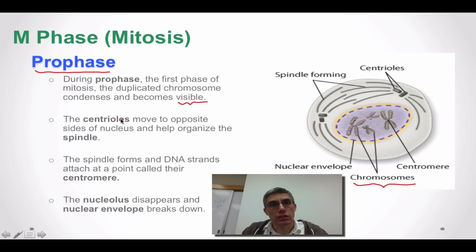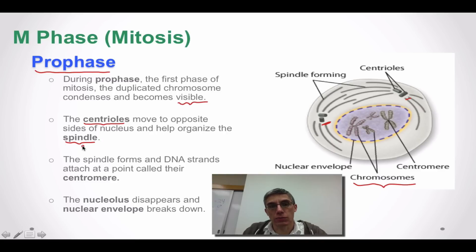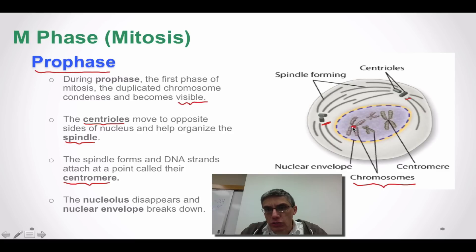In addition to seeing the duplicated chromosomes, we can now see a special cell part called a centriole. During the G2 phase, the cell synthesizes special organelles important to make sure division occurs correctly, and centrioles are one of those. Another structure produced during G2 would be the spindle fibers, which are connected to the centrioles and eventually connected to the chromosomes as well. The spindle connects at a special point on the chromosome called a centromere.